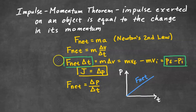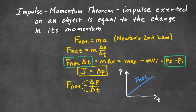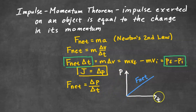If we rearrange and divide both sides by Δt, we get F_net = ΔP/Δt. This is significant because if we have a momentum versus time graph, the slope of that graph represents the net force.